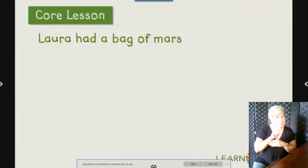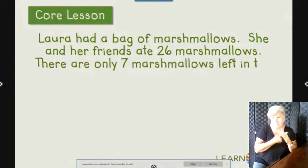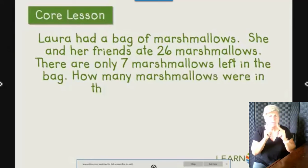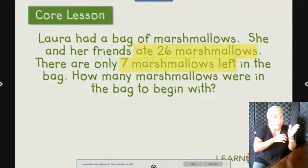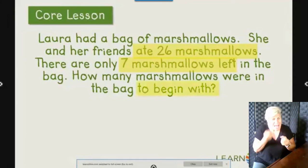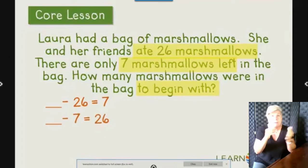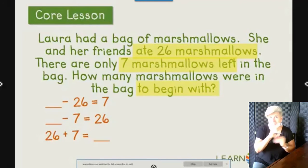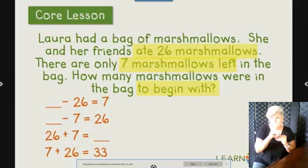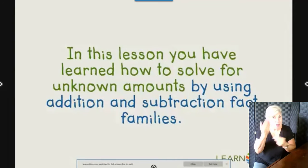Back to our original question: Laura had a bag of marshmallows. She and her friends ate 26 marshmallows, and there are only 7 marshmallows left. We know that some amount minus 26 equals 7, so we need to find the starting amount. A related addition fact is 26 plus 7 equals our unknown, or 7 plus 26 equals our unknown. 7 plus 26 equals 33, so the number of marshmallows in the bag to begin with is 33. In this lesson, you have learned how to solve for unknown amounts by using addition and subtraction fact families.